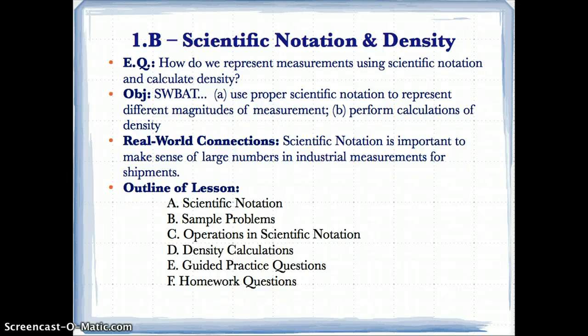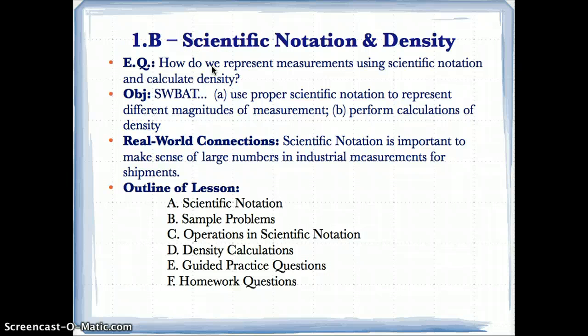1.B: Scientific Notation and Density. This assignment is due Wednesday, September 10th; it was assigned Tuesday, September 9th. The essential question is: how do we represent measurements using scientific notation and calculate density? The objective is that students will be able to use proper scientific notation to represent different magnitudes of measurement and perform calculations of density.